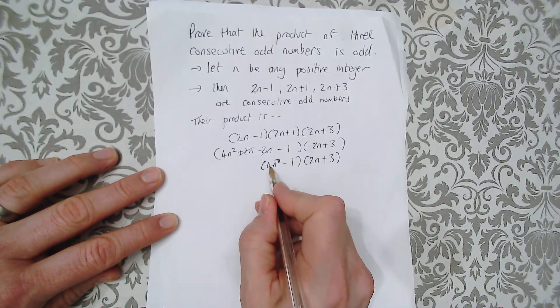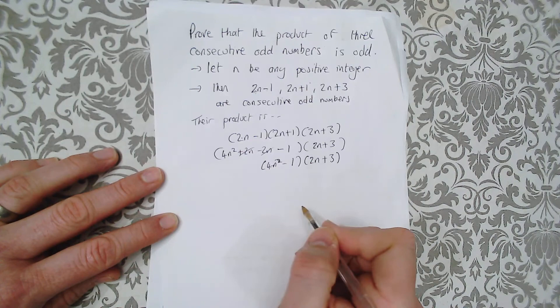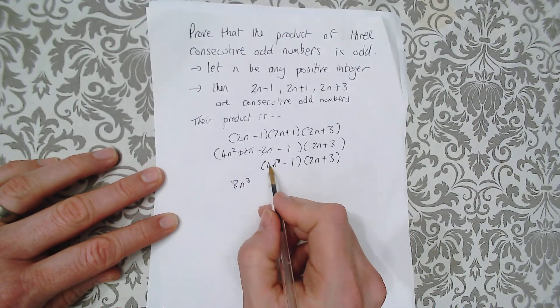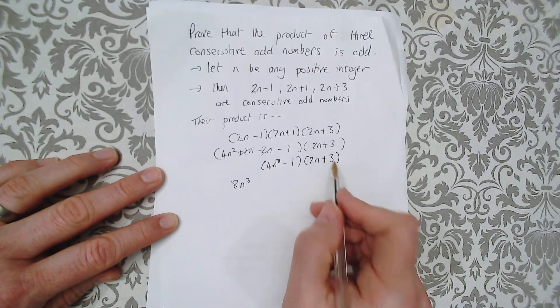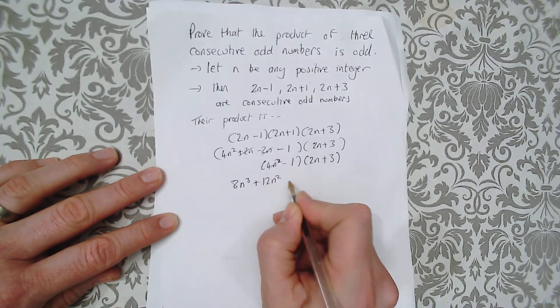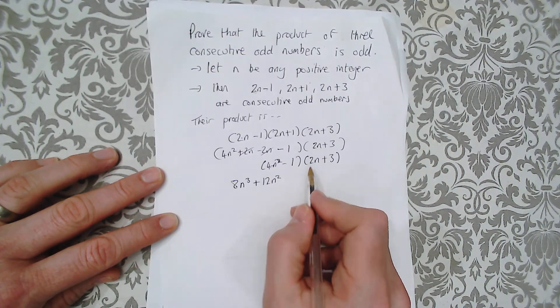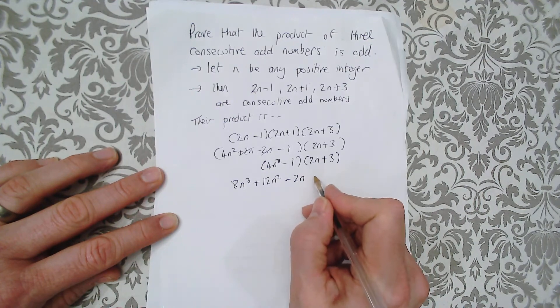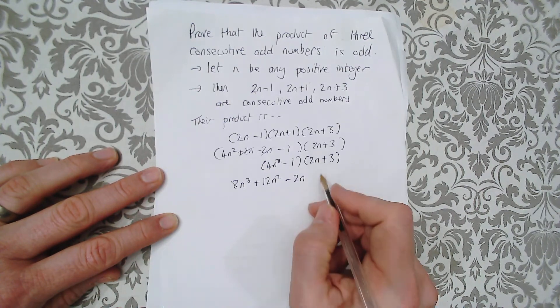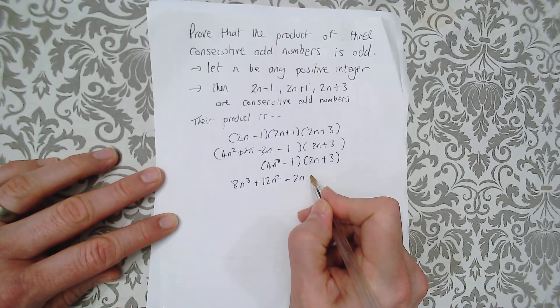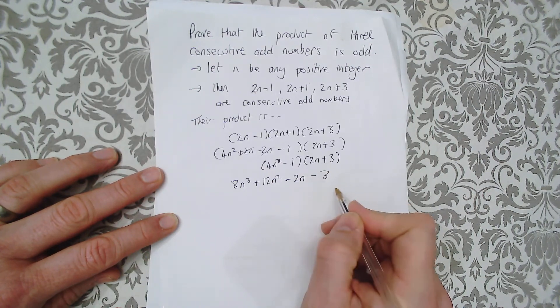And then we expand this. 4n squared multiplied by 2n is 8n cubed. 4n squared multiplied by 3 is 12n squared. Negative 1 multiplied by 2n is negative 2n, take away 2n. And then negative 1 multiplied by 3 is negative 3.